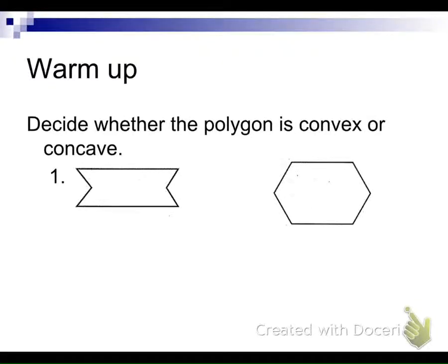So warm-up. Decide whether the polygon is convex or concave. Question number one here. Dylan? Concave. How do you know? Because it hits more than four times. Yep. Concave, it hits more than four times, or it hits more than twice. So we say concave, more than twice.